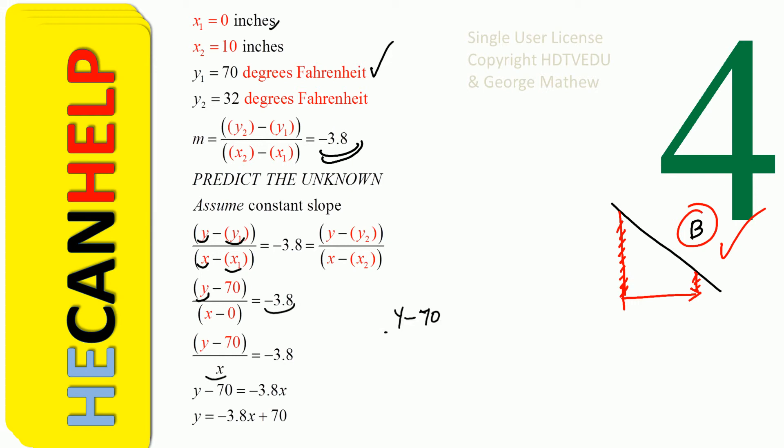y minus 70 divided by x equals negative 3.8. Cross multiply and you get y minus 70 equals negative 3.8x. Add 70 to both sides. So what do we get? y equals negative 3.8x plus 70.